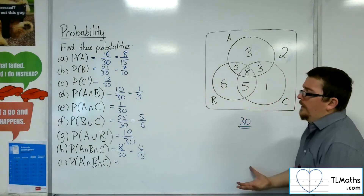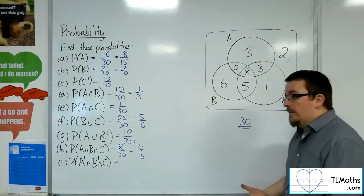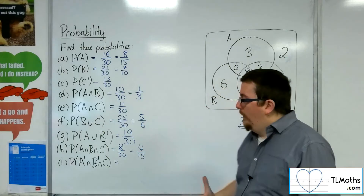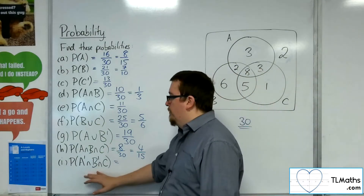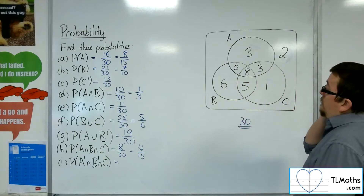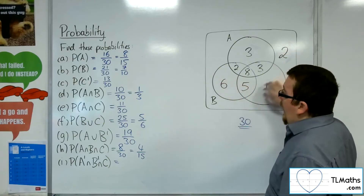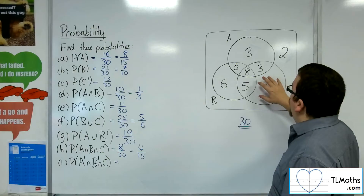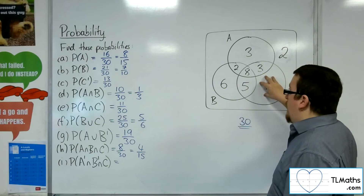Now this one is certainly more complicated and pushes the very limits of what you could expect with this type of problem in an exam. So we've got not A — anything that is outside of A — and anything that is outside of B. The overlap of those two regions is the 1 and the 2. And anything that is in C.